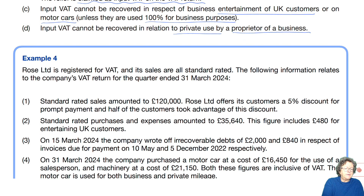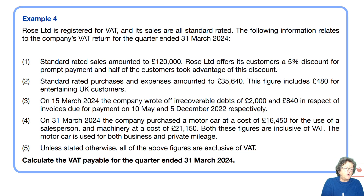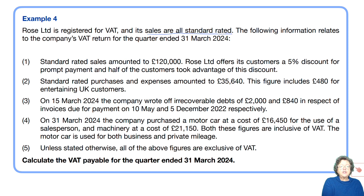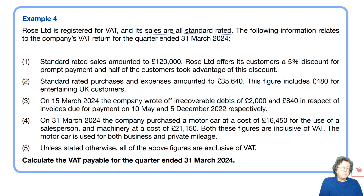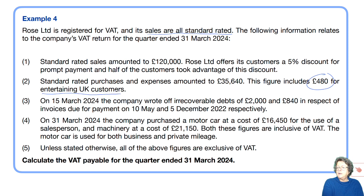Let's have a look at example number four. We have Rose Limited, who is registered for VAT, standard rated, charging tax at 20%. This is her quarter to the 31st of March 2024. Standard rated sales amounted to 120,000. She offers customers a 5% discount for prompt payment and half of them took that advantage. Standard rated purchases and expenses were 35,640, including 480 for entertaining.